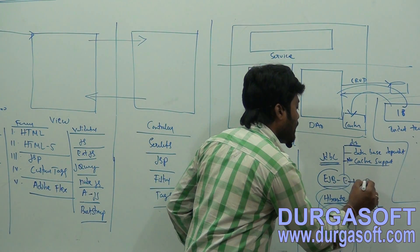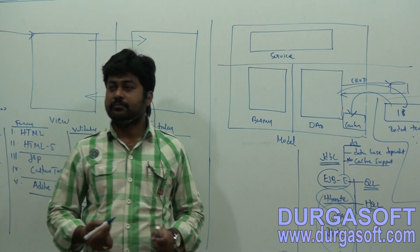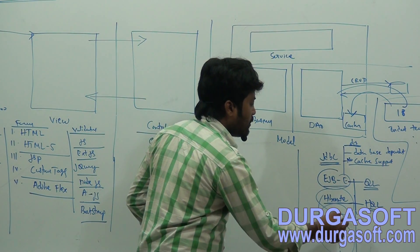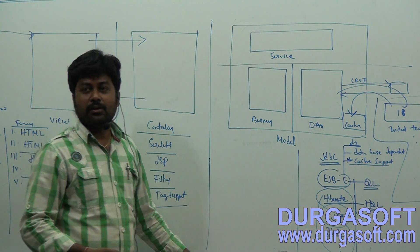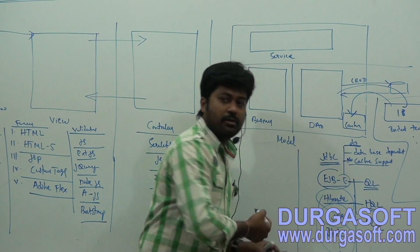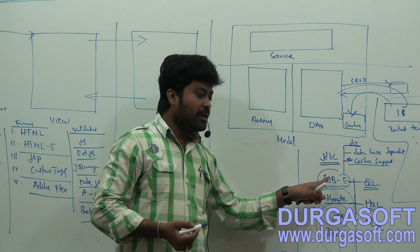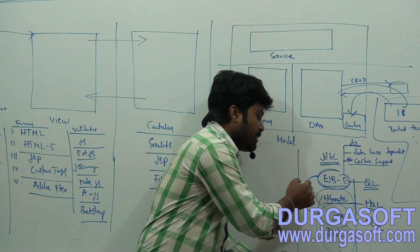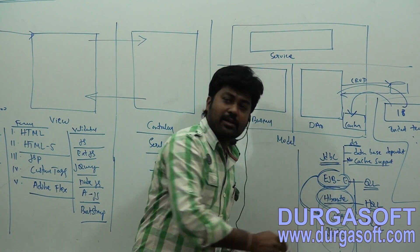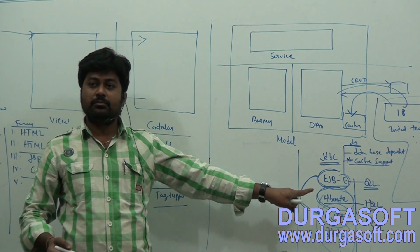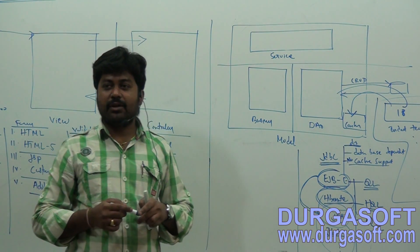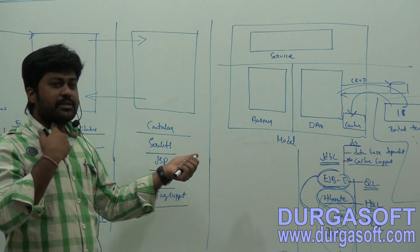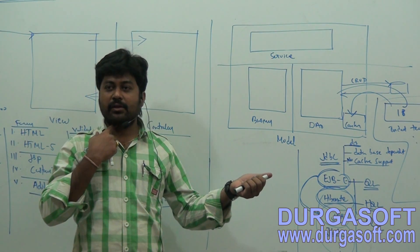In EJB also there is a query language, and that query language is also database-independent. JPA is more advanced than EJB. Sun designed JPA after EJB. Hibernate is a third-party tool given by developer Gavin King, and Hibernate releases are from JBoss and Red Hat.